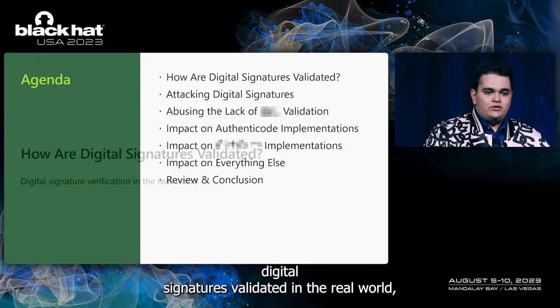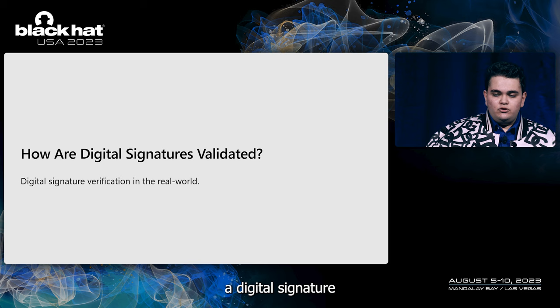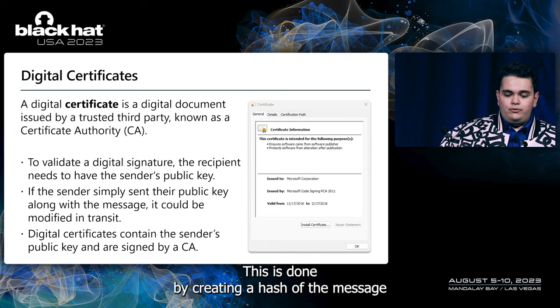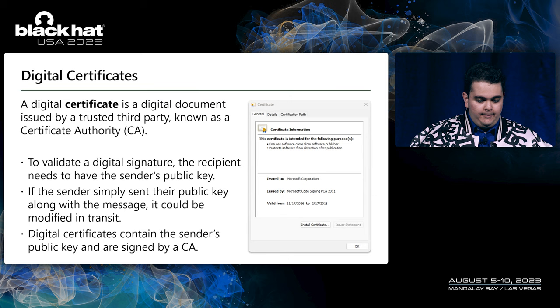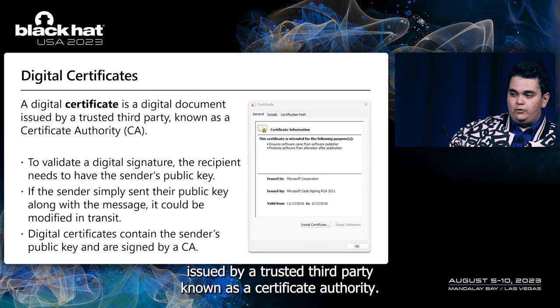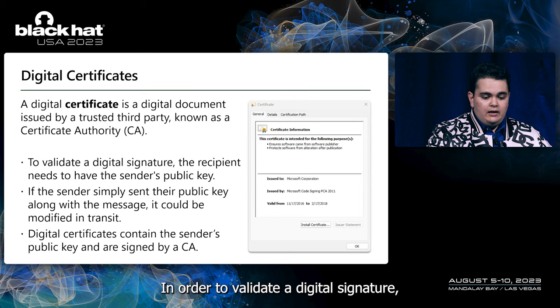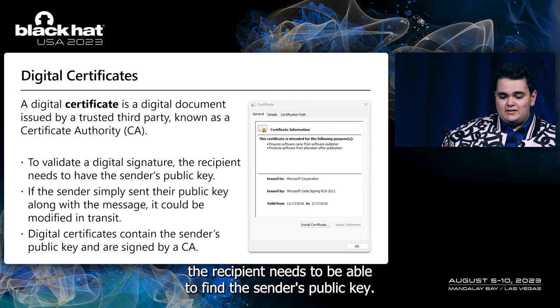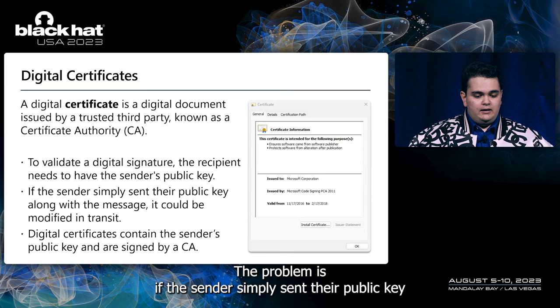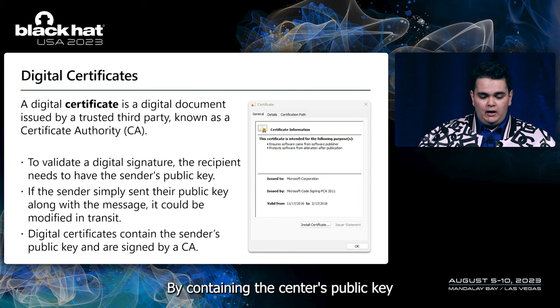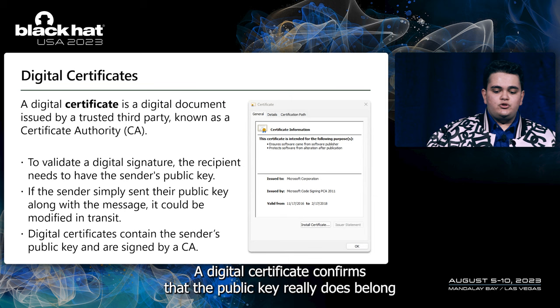So, how are digital signatures validated in the real world? A digital signature is used to verify that a message, document, or software comes from a specific sender and hasn't been altered during transmission. This is done by creating a hash of the message and then encrypting that hash with the sender's private key. A digital certificate, on the other hand, is a digital document issued by a trusted third party known as a certificate authority. It contains the public key corresponding to the sender's private key, as well as information about the identity of the sender. In order to validate a digital signature, the recipient needs to be able to find the sender's public key. If the sender simply sent their public key along with their message, there's no way the recipient can know that the public key really belongs to the sender. By containing the sender's public key and being digitally signed by a trusted third-party CA, a digital certificate confirms that the public key really does belong to the sender.